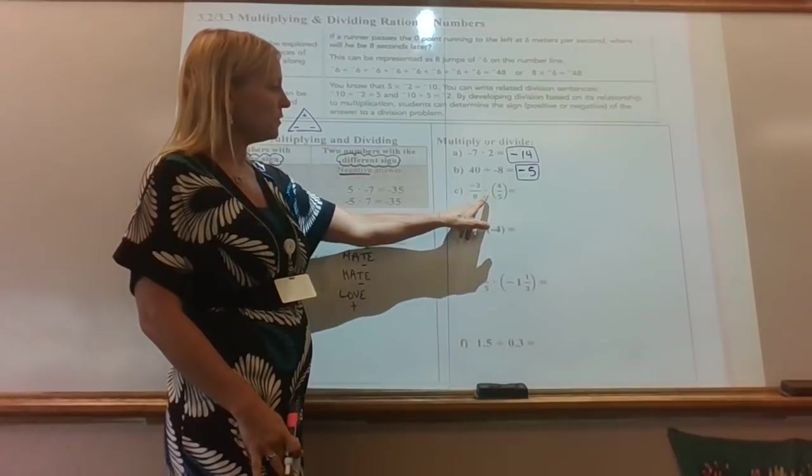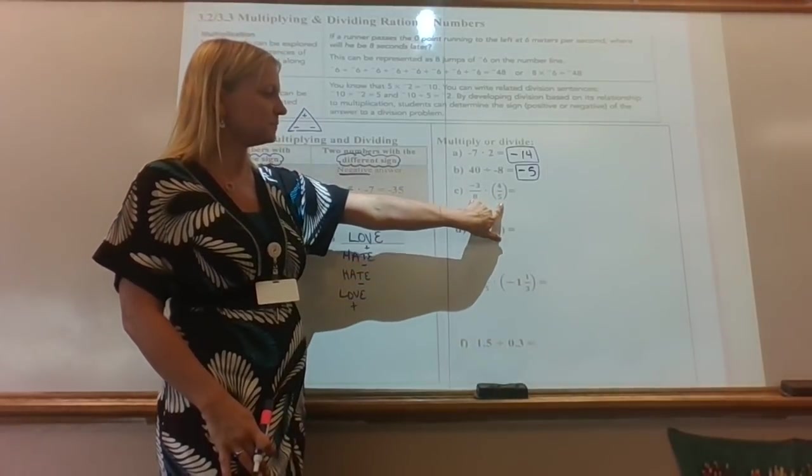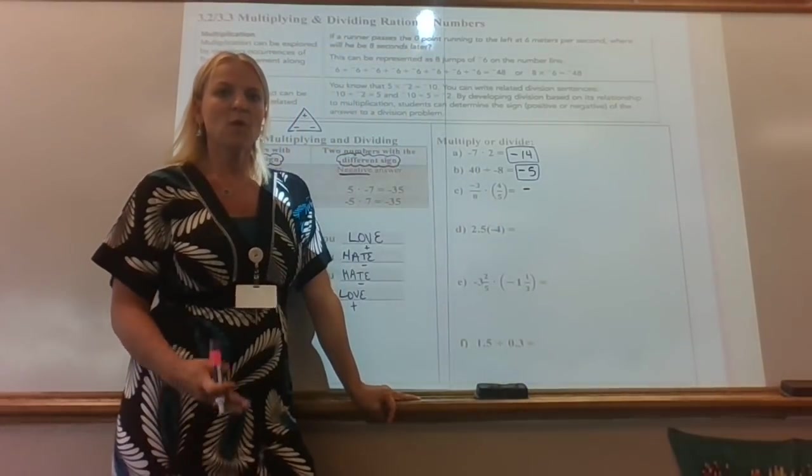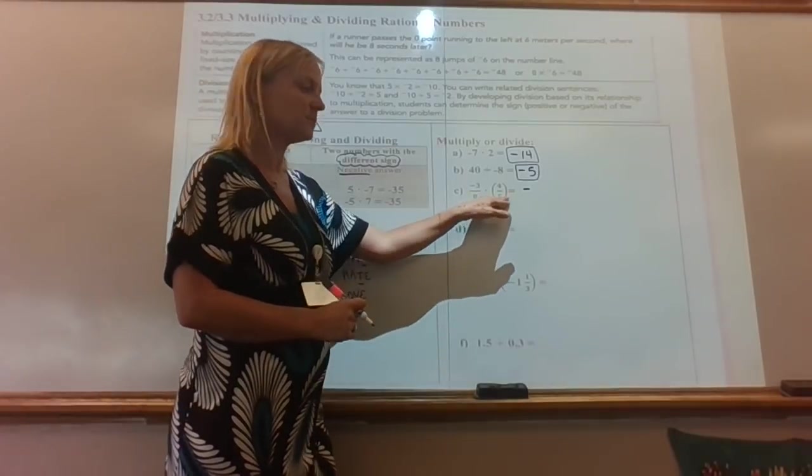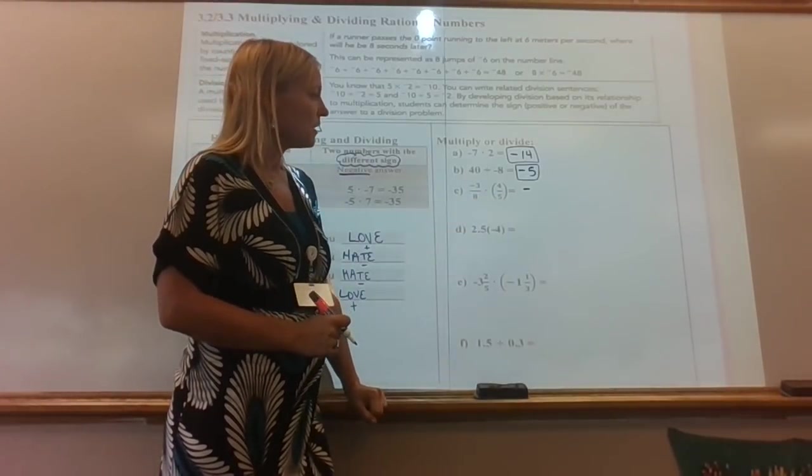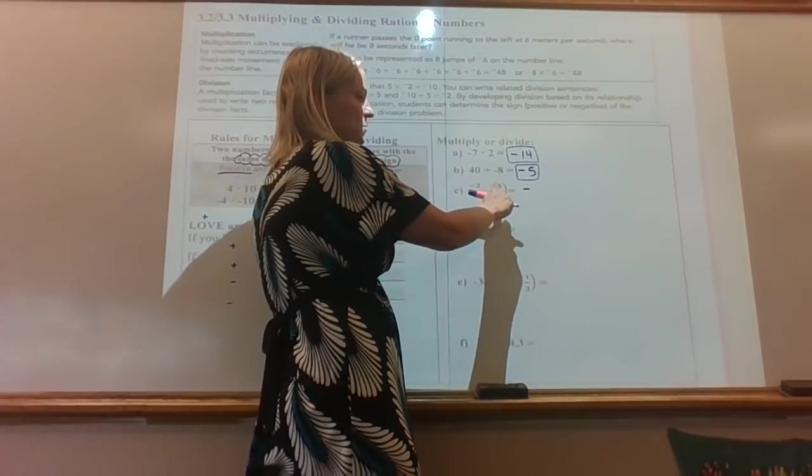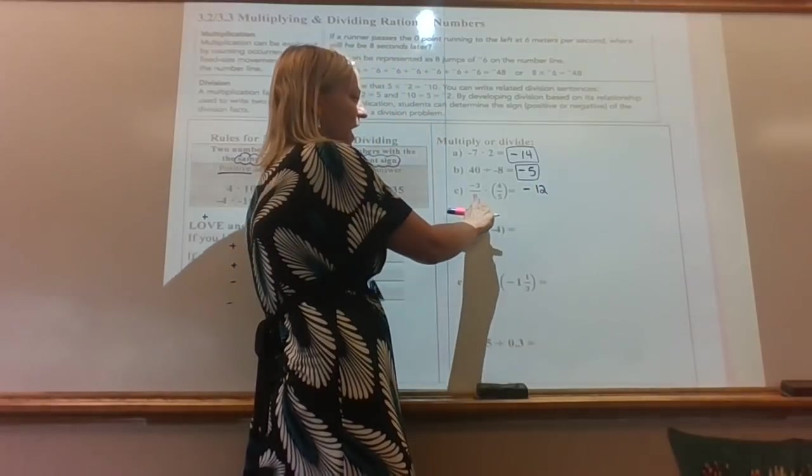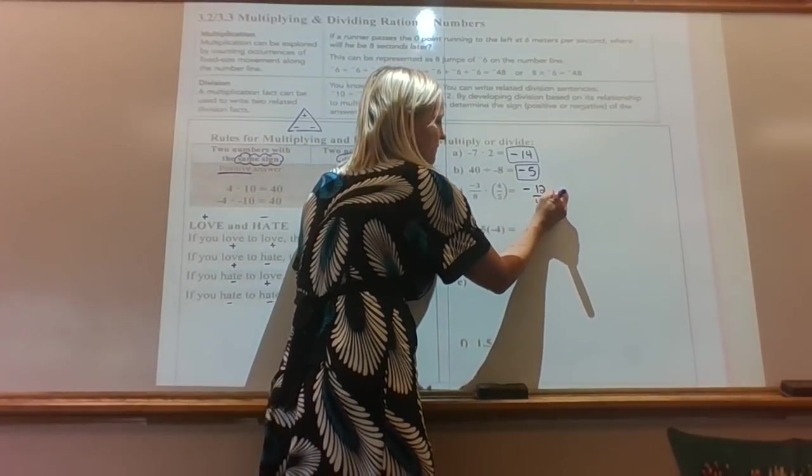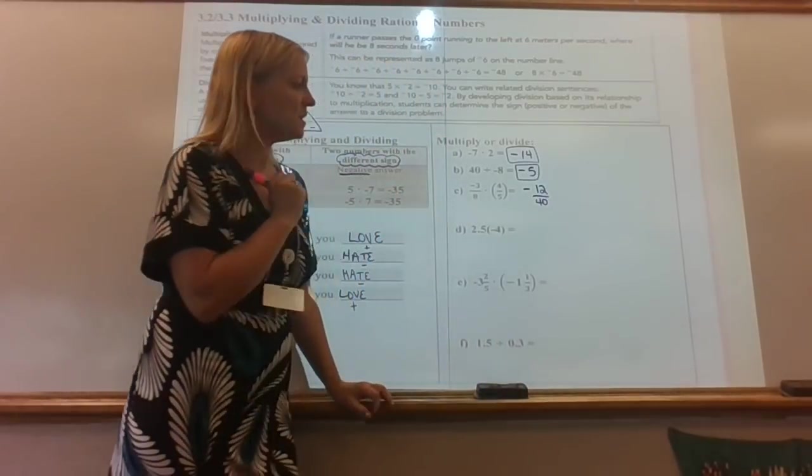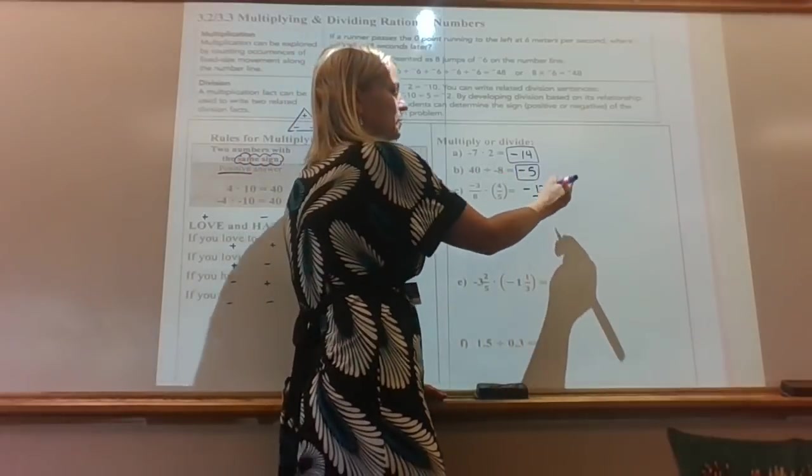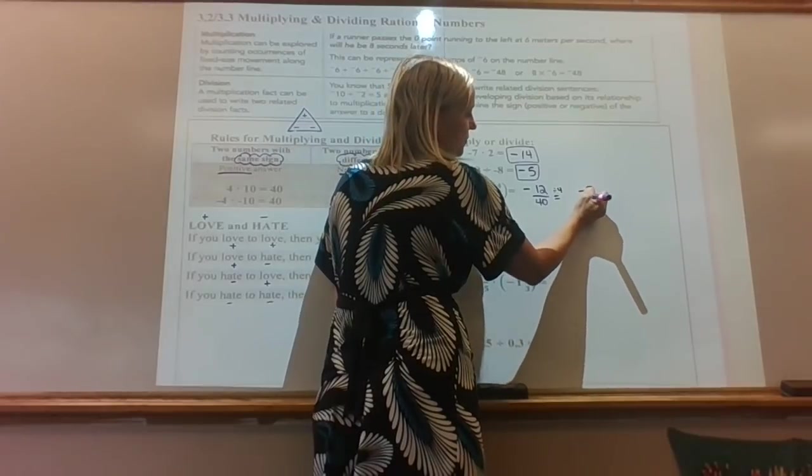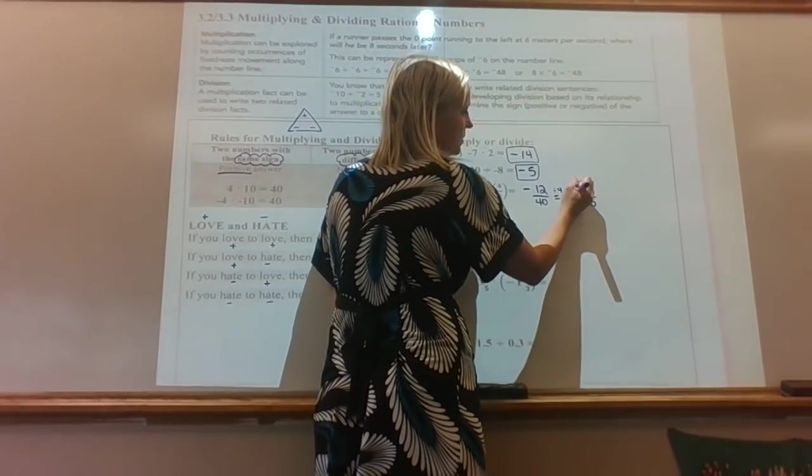Now some fractions. We are multiplying two fractions here. First, let's figure out our sign. Negative times positive. They're different, so it's going to make it negative. Now what we want to remember when we multiply fractions, we do not have to make the common denominator. So it makes this easier. We can just go ahead and multiply our numerators. Three times four, which makes 12. And then eight times five, which makes 40. But then we would need to reduce. Both of these numbers are divisible by four. So I can divide them both by four, and I would get negative three and I would get 10.